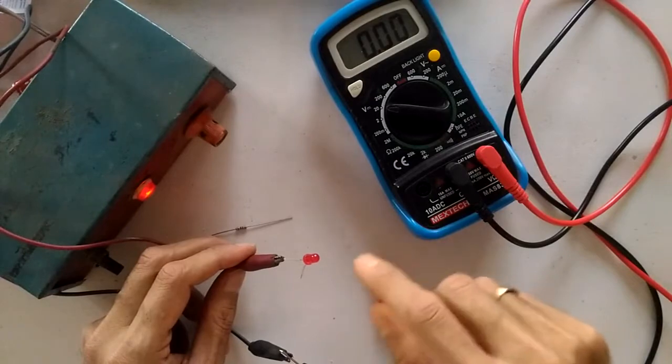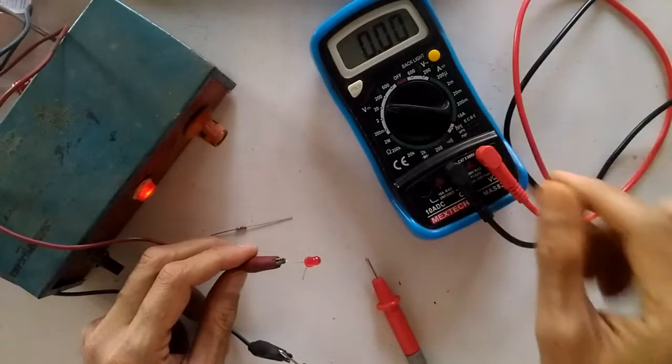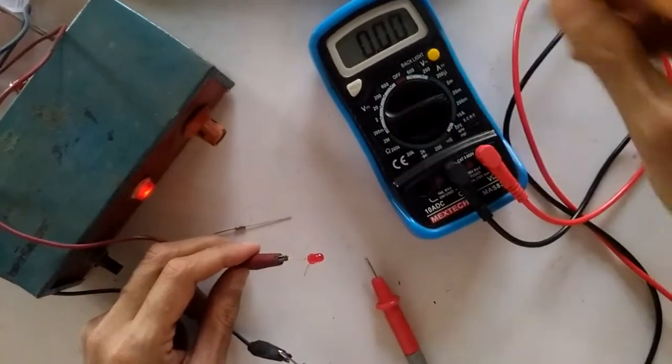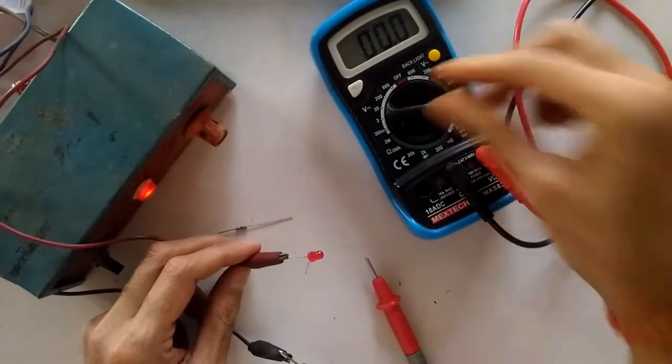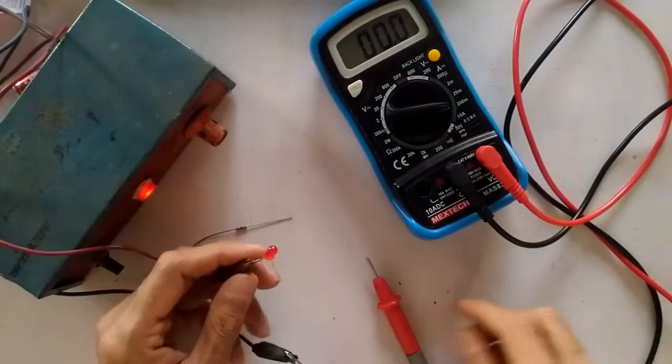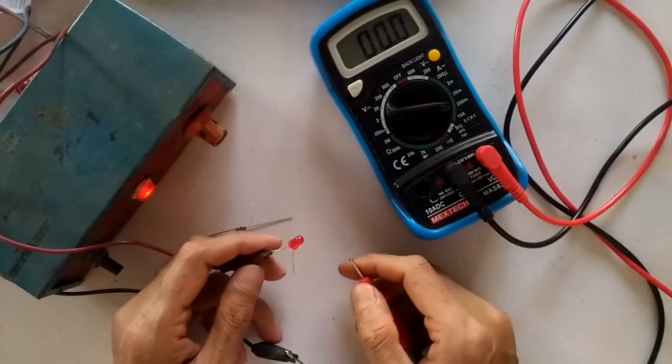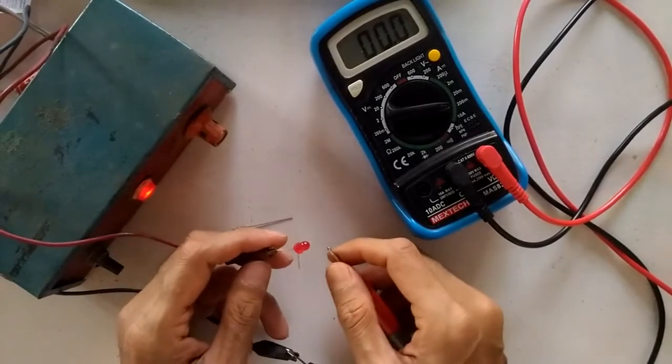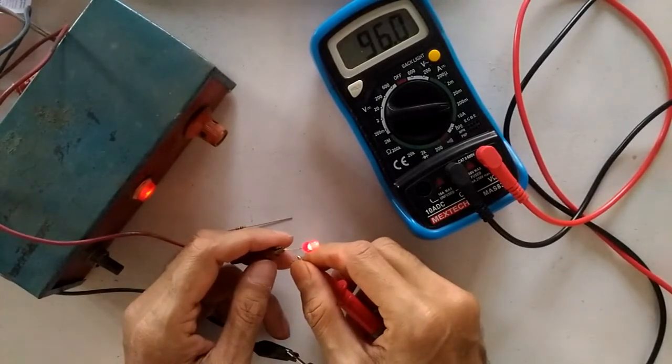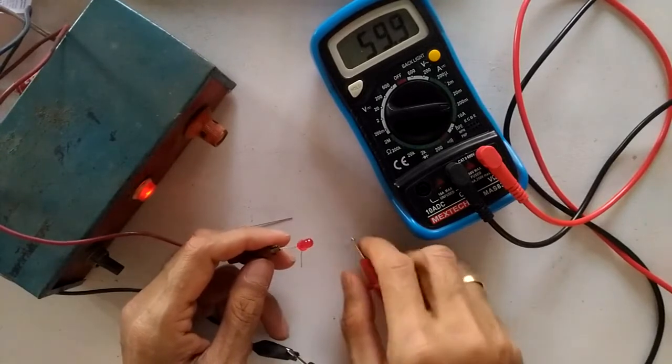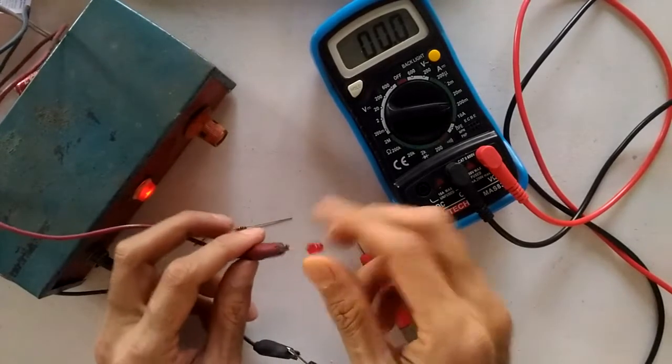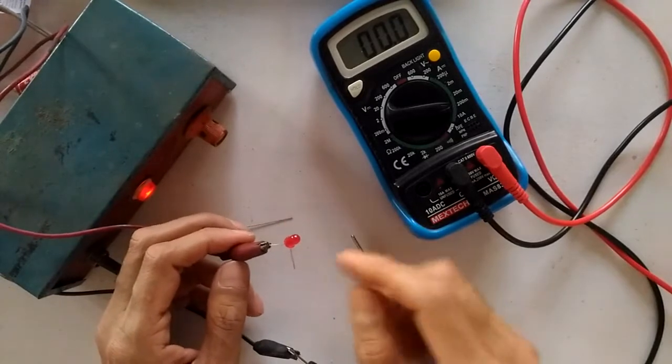The standard LEDs, the maximum current that can flow through them is around approximately 20 milliamperes. See what happens when you don't connect a current limiting resistance. You can see it's almost like 90 milliamperes flowing through, which is not going to be good for the health of the LED.